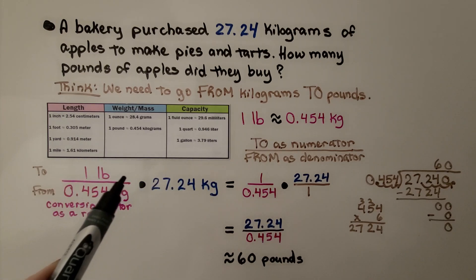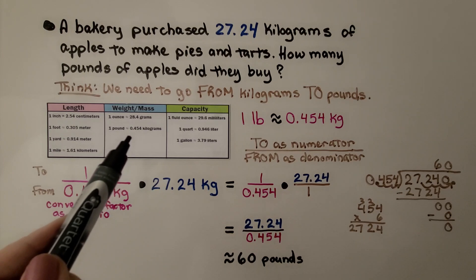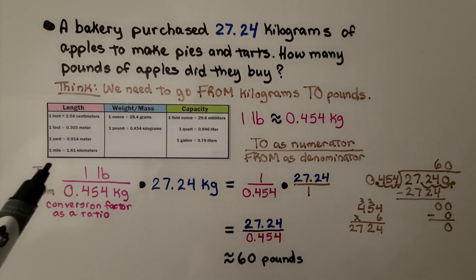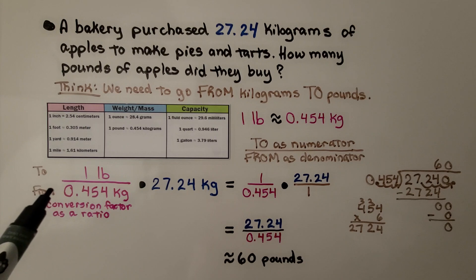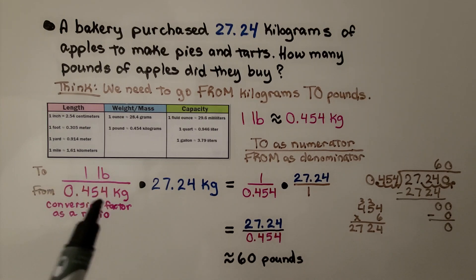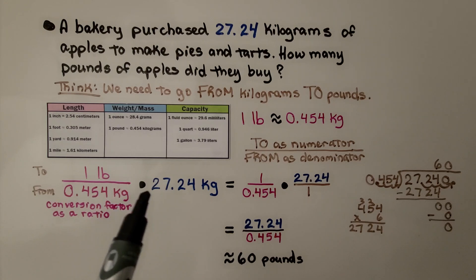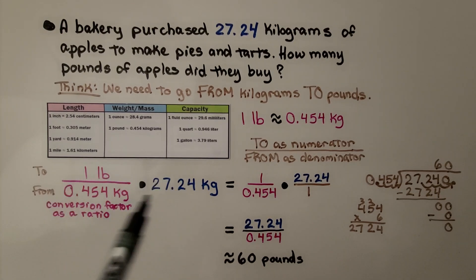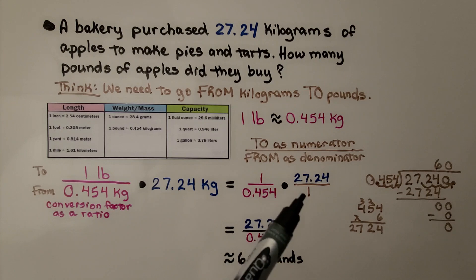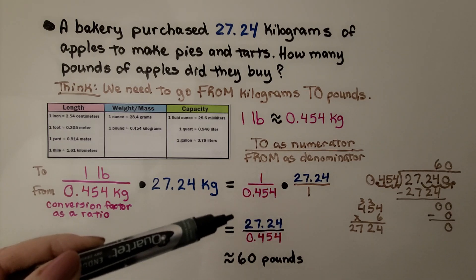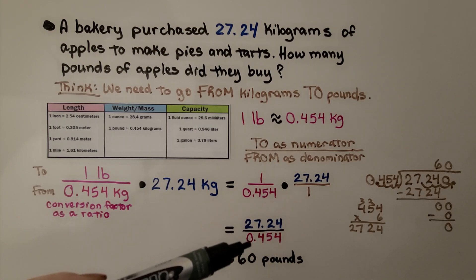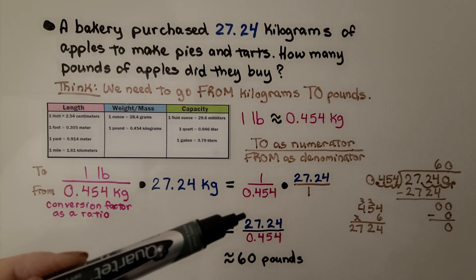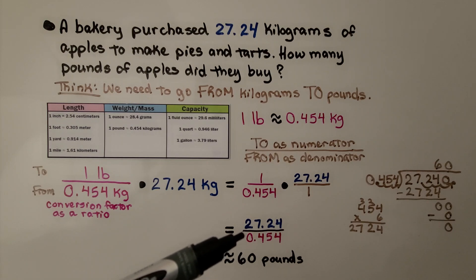We see from our table that one pound is equal to 0.454 kilograms. So here we have our 'to' and our 'from'. This is our conversion factor as a ratio, and we're going to multiply this conversion factor by 27.24 kilograms. We can think of multiplying straight across if we write this over 1, and that gives us 27.24 over 0.454. We can use division: 27.24 divided by 0.454.